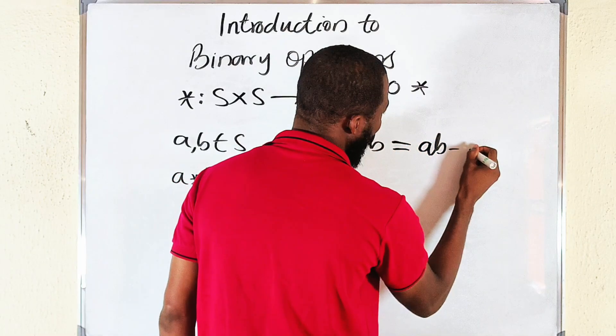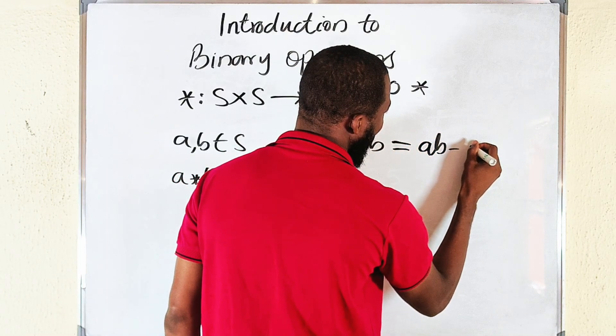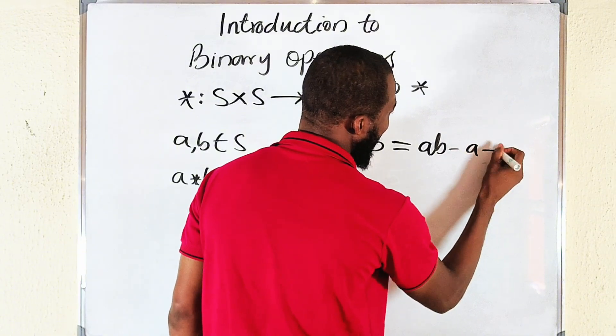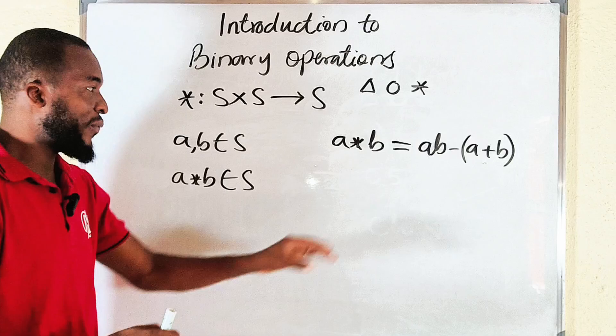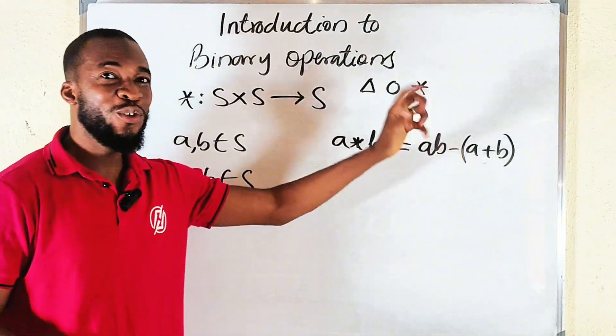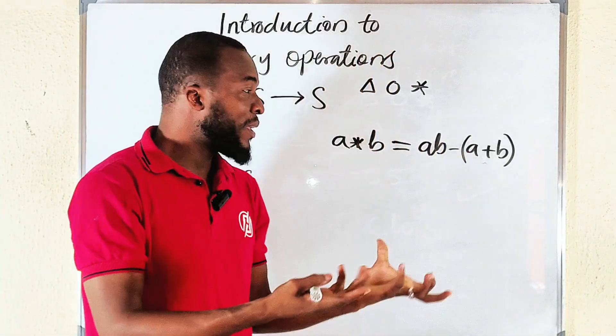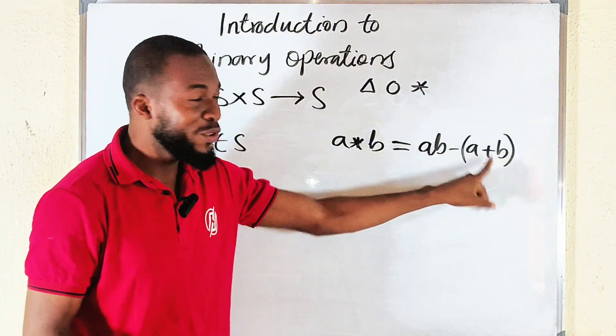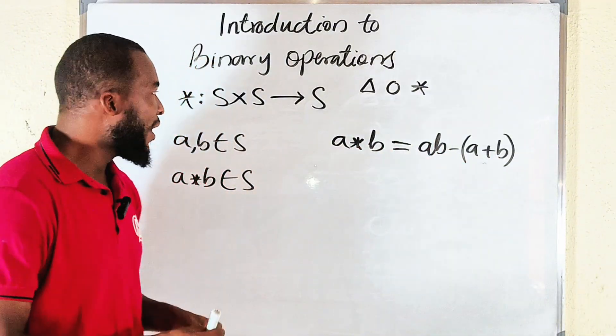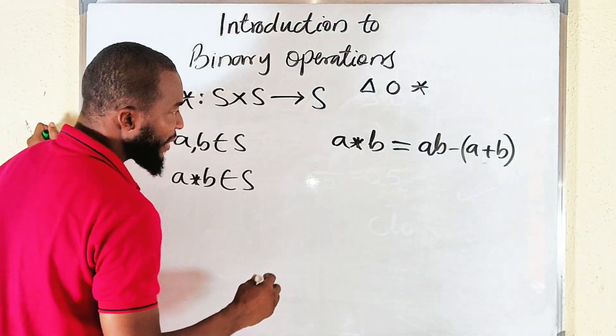So whenever you are given any other operation, it has to be defined. Let's define this as ab minus a times a plus—let me use a plus b. This is just my own definition. I just decided to define this as this. You see we use some of the basic operations to define this. We use minus, we use multiplication, and we use addition in order to define this.